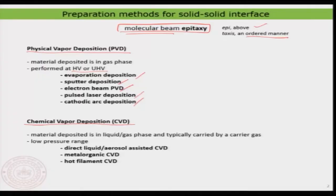The essence of chemical vapor deposition is that the material to be deposited should be carried by a gas, either in mixed or pure form, and that gas carrying the material is then deposited on the surface. Within CVD itself you can have aerosol-assisted chemical vapor deposition, metal organic chemical vapor deposition, hot filament chemical vapor deposition, and so on. We will look at a few in detail and see some examples.